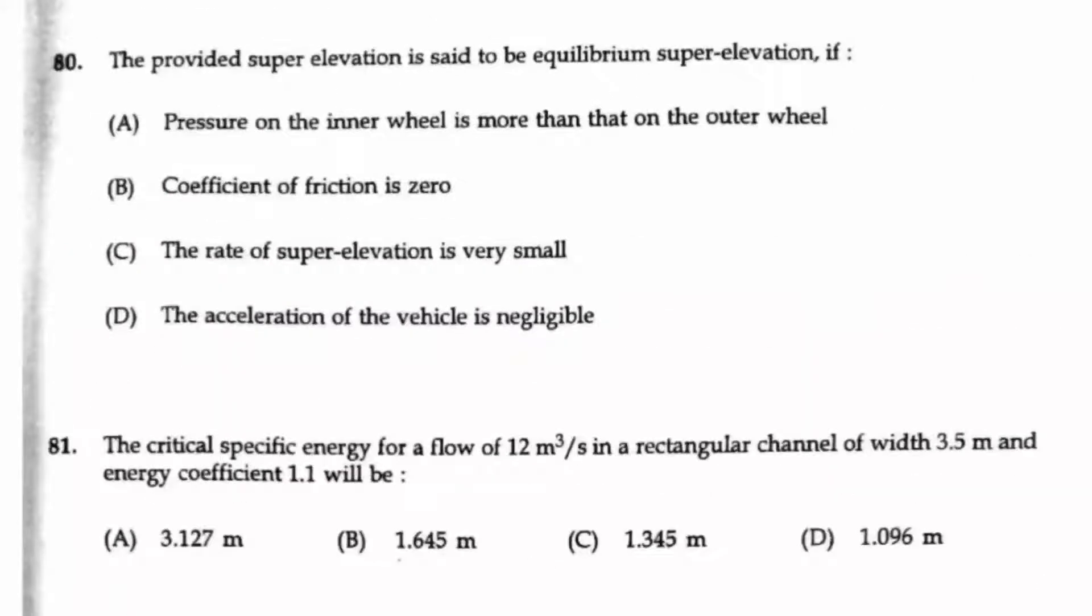Question number 80. The provided super elevation is said to be equilibrium super elevation if the coefficient of friction is zero, that is option B is the right answer here. And if they have given that the pressure on the inner wheel is equal to the pressure on the outer wheel, that is also a correct answer here.